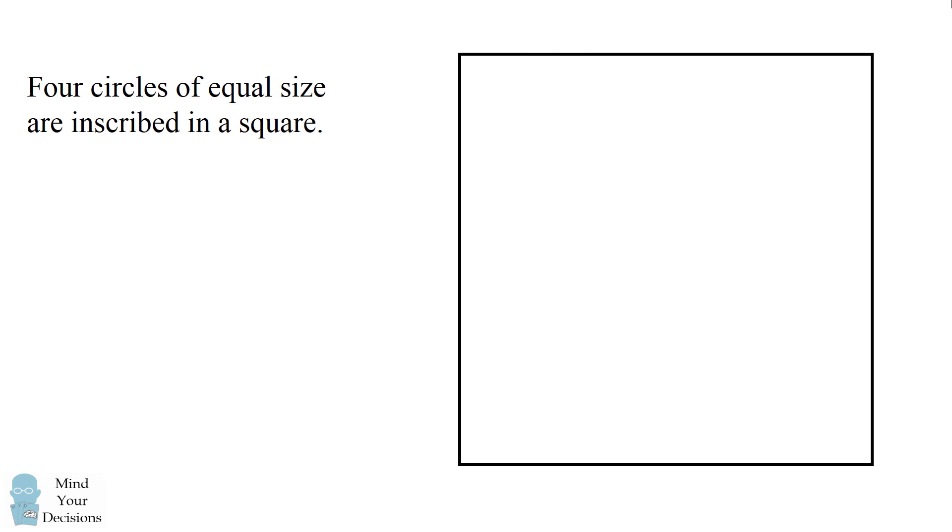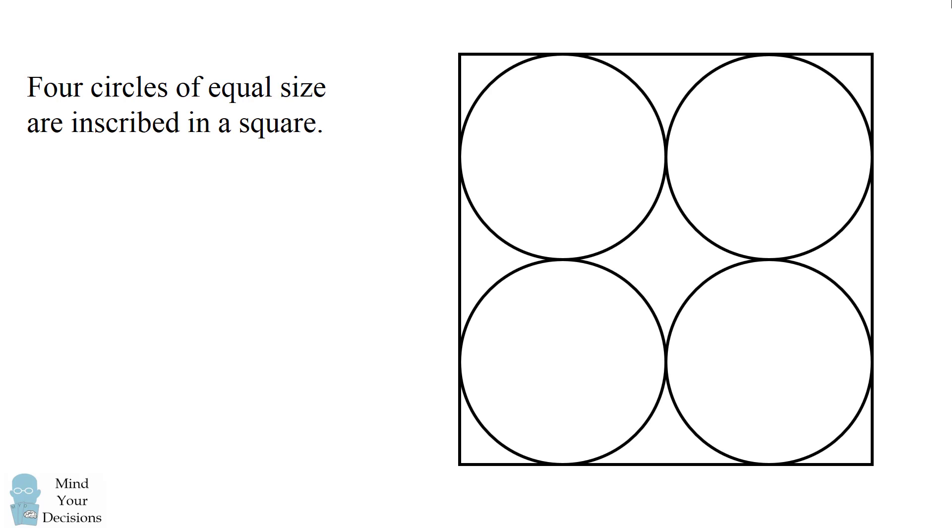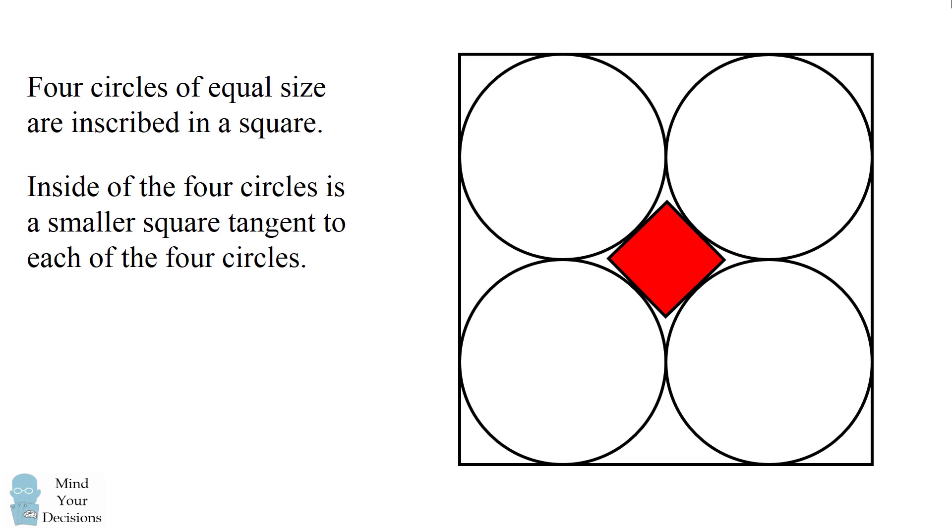Hey, this is Presh Talwalkar. Four circles of equal size are inscribed in a square. Inside of the four circles is a smaller square tangent to each of the four circles.